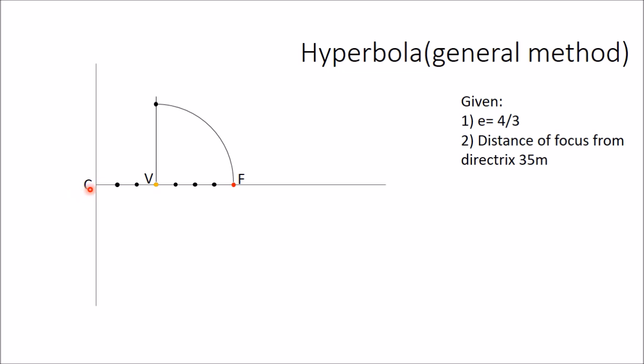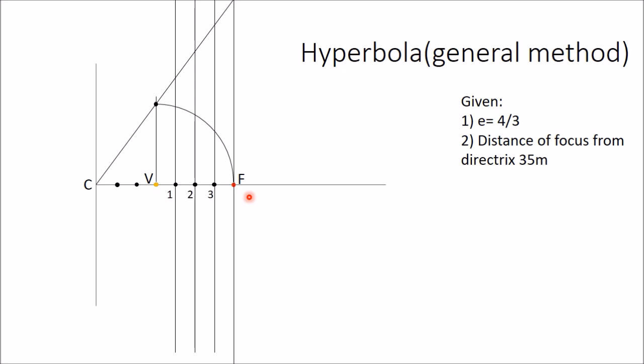Join C with this point and extend the line. Now draw vertical lines through these division points. If space permits, you can take one or two extra points also. Number these points as 1, 2, 3, etc. The intersection of these vertical lines with the inclined line gives 1', 2', etc.